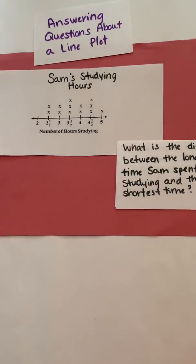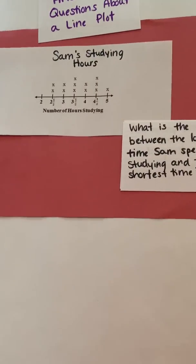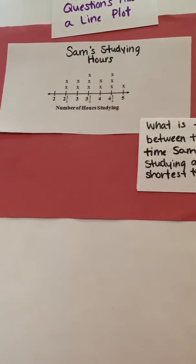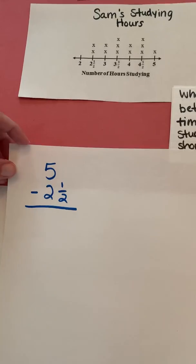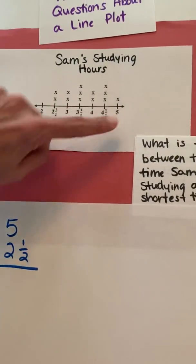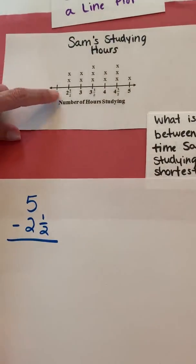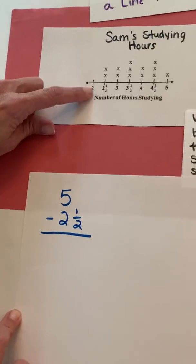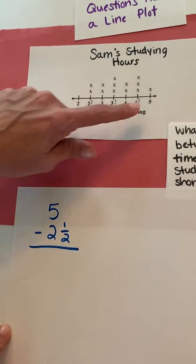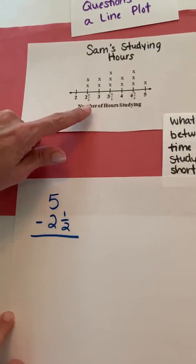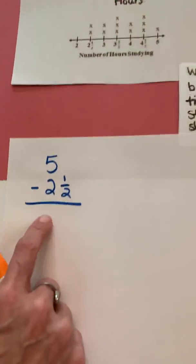All right, what is the difference between the longest time Sam spent studying and the shortest time? All right, so the longest time he spent studying would be the five hours. The shortest time he spent would be two and a half. He didn't study any time for two hours. It was two and a half or more. So I'm only going to subtract two and a half from five. So I've set that up here.